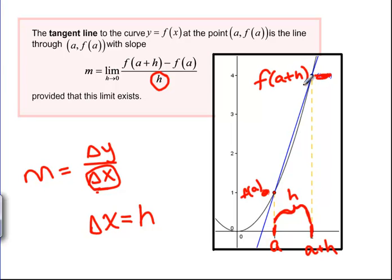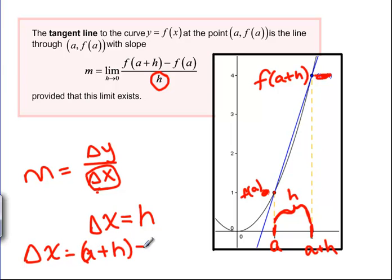Our change in y is f of a plus h minus f of a. The change in x is a plus h minus a, but those a's cancel and we just end up with h. So on the bottom we have plain h: f of a plus h minus f of a, divided by h.